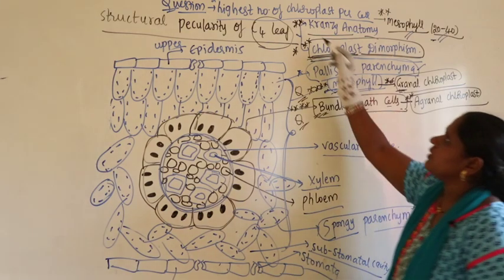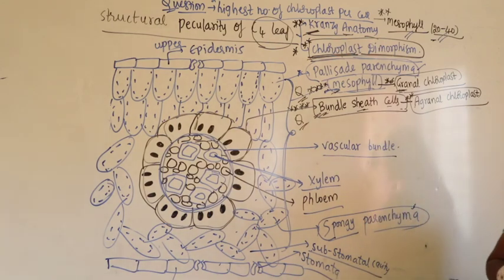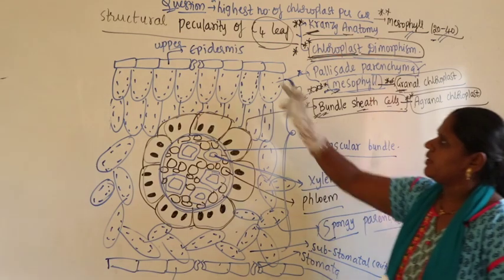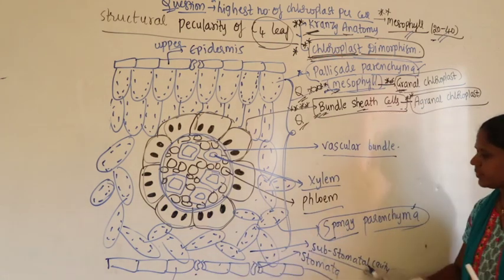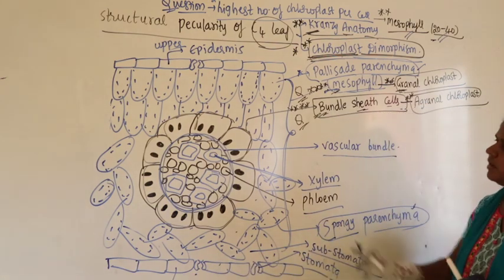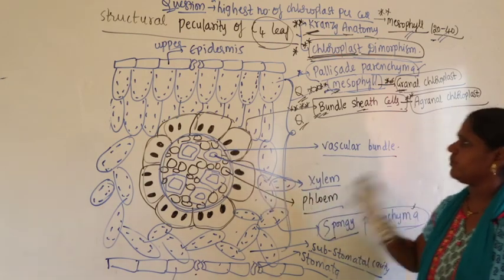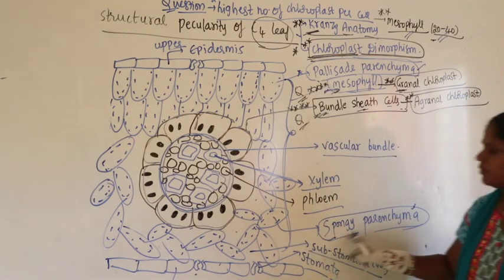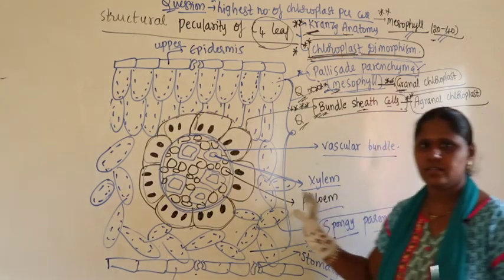The second structural peculiarity is Kranz anatomy. Kranz means ring-like arrangement of bundle sheath cells. General parts include upper and lower epidermis, stomata, sub-stomatal cavity, vascular bundle with xylem and phloem, palisade parenchyma, and spongy parenchyma.